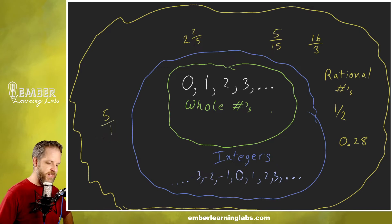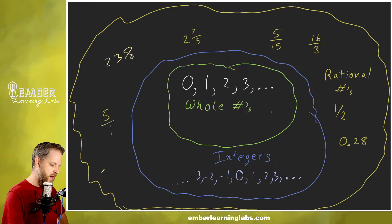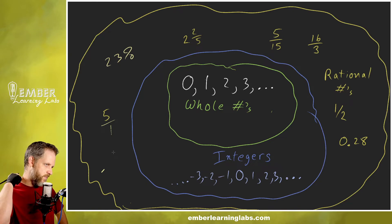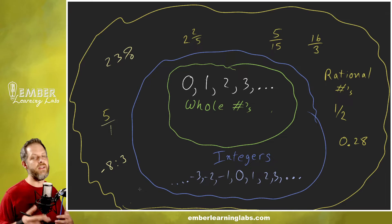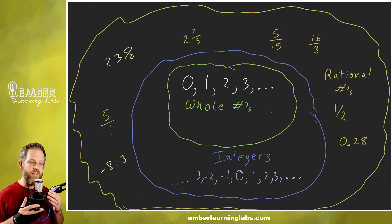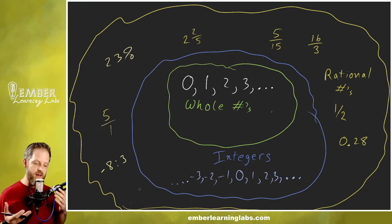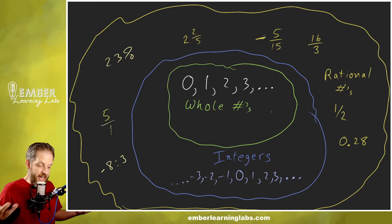If it can be reduced down to a fraction with whole numbers on top and bottom, it is a rational number. Something like 23% — that can be written as a fraction, so that's a rational number. Something like a ratio, say 8 to 3, would also be a rational number. And negatives are also rational — negative rational numbers are absolutely legitimate.